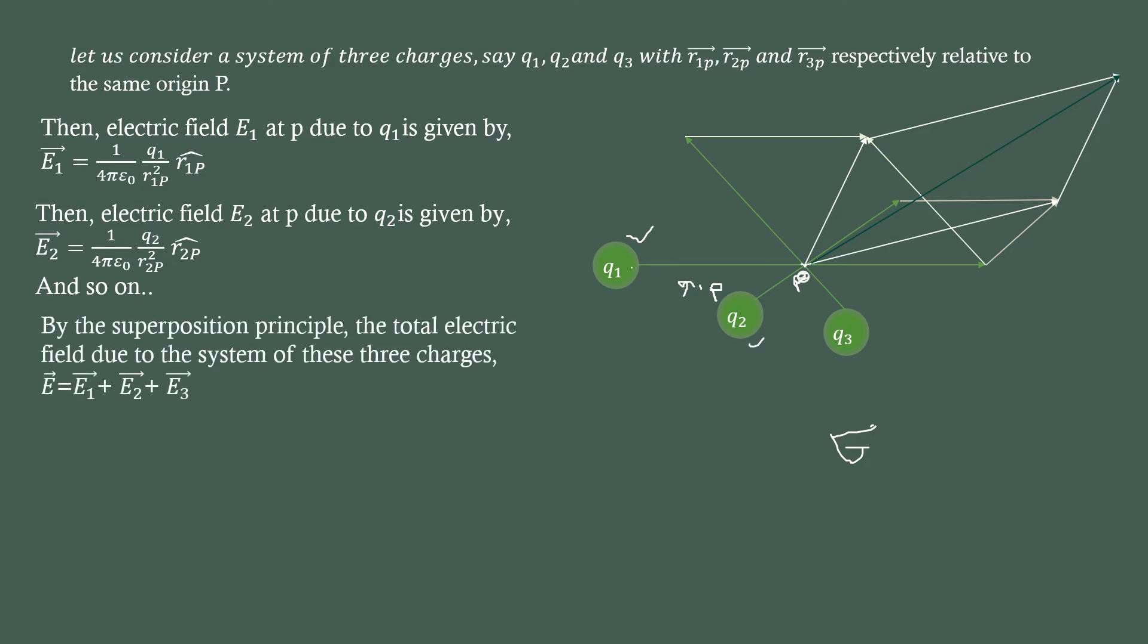That's the next point. The net electric field at point P due to q1, q2, and q3. To add the total electric field, the total electric field at P is due to q1, q2, q3.